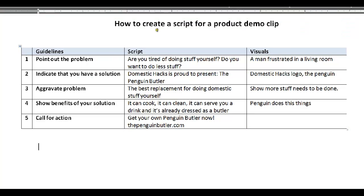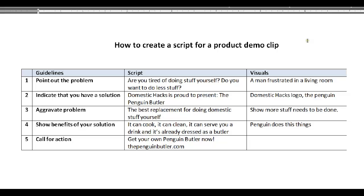So here's our script. We are recommending working with five points for these kind of movies, so let's go over the points. Point number one is point out the problem, because each product you try to promote actually solves a problem for a certain user.